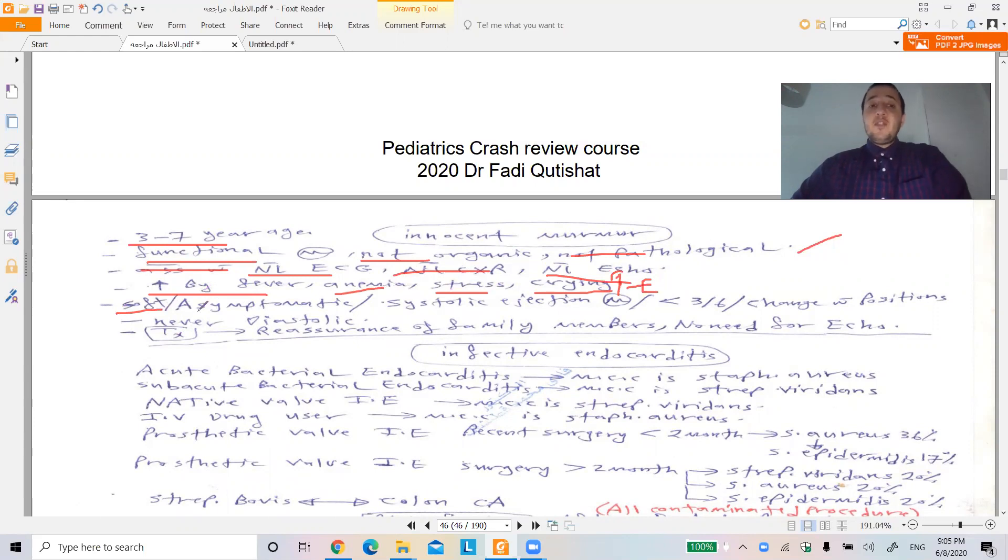Soft, very soft. Soft means it's a little bit less than 3. The murmur is graded from 0 to 6. This murmur is 1 or 2, just 1 over 6 or 2 over 6, not more than 2 over 6.